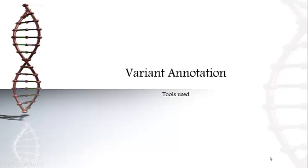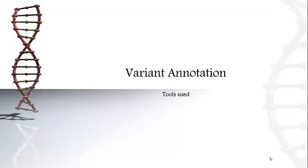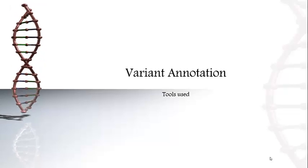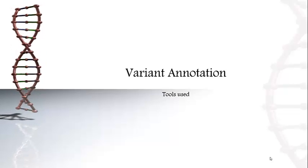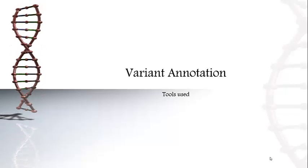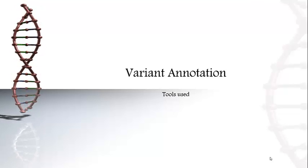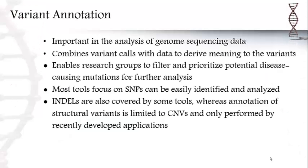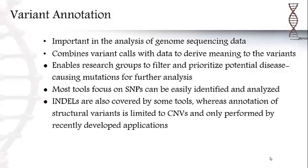In this tutorial, we're going to take a brief look at five of the many tools that can be used for variant annotations and some of the things that they can do. Variant annotation is the first step in analyzing sequencing reads, and its purpose is that it allows researchers to differentiate between potential disease-causing mutations.